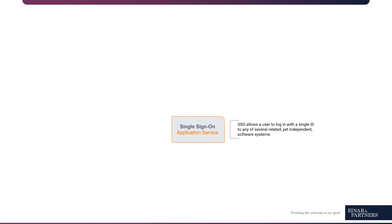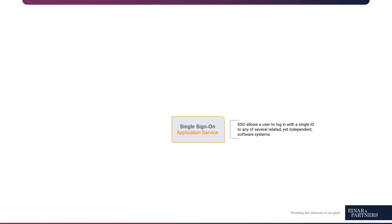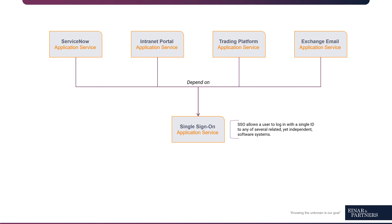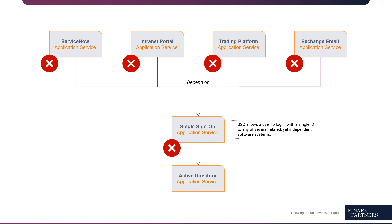We use SSO for a multitude of applications — for example, internet portals. We can also implement it into our ServiceNow instance. And you can imagine that if an SSO application service goes down, a lot of other dependent application services might go down as well. So, by creating this holistic picture and connecting application services among themselves, we are able to pinpoint exactly what is affected if something goes wrong.